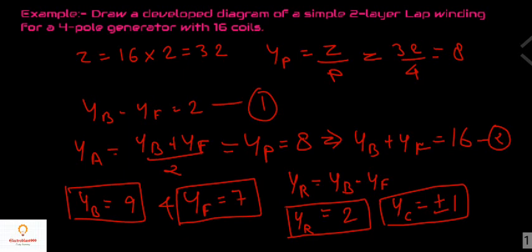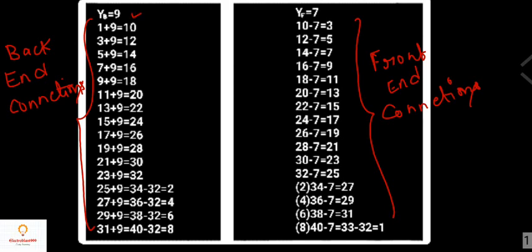Now let us draw a simple winding table for this question. We have back pitch equals 9 and front pitch equals 7. These are our back-end connections and these are our front-end connections. At the back end, back pitch is 9, so starting from conductor 1: 1 plus 9 equals 10 at the back end. Front pitch is 7, so 10 minus 7 equals 3. Again at the back end: 3 plus 9 equals 12, and at the front end: 12 minus 7 equals 5.